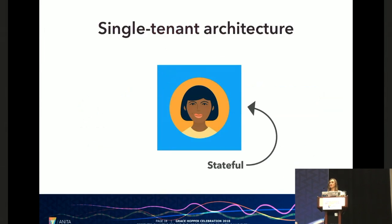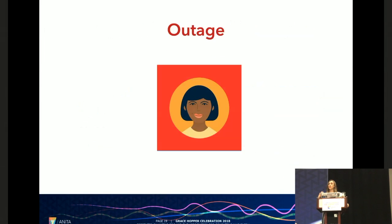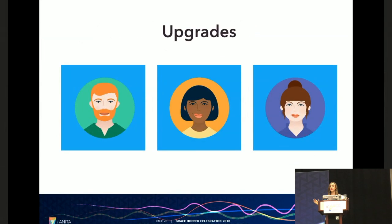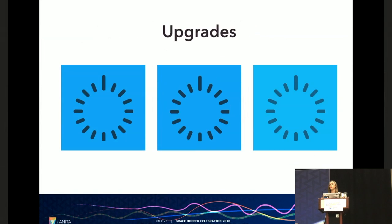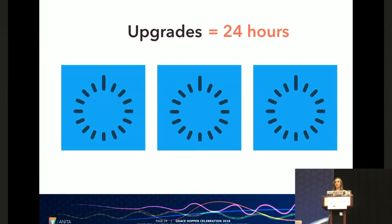But when we scaled to tens of thousands of customers we started to run into some problems. For example if a compute node were to go down that would mean that an entire customer somewhere and all of their users would be completely unable to access their instance. Upgrades became pretty problematic because if we had tens of thousands of customers that meant that we had tens of thousands of compute nodes and we had to go through and apply an upgrade to every single one of them.